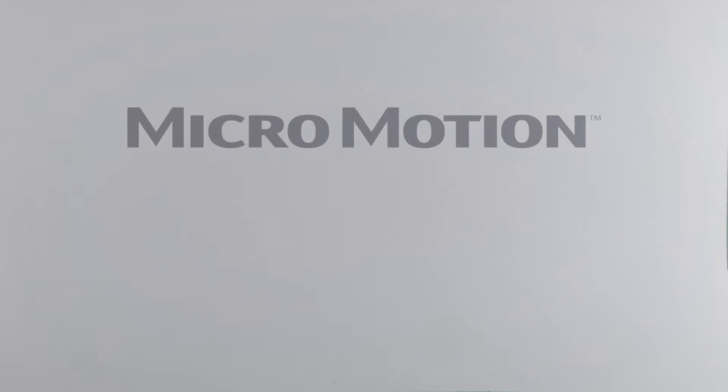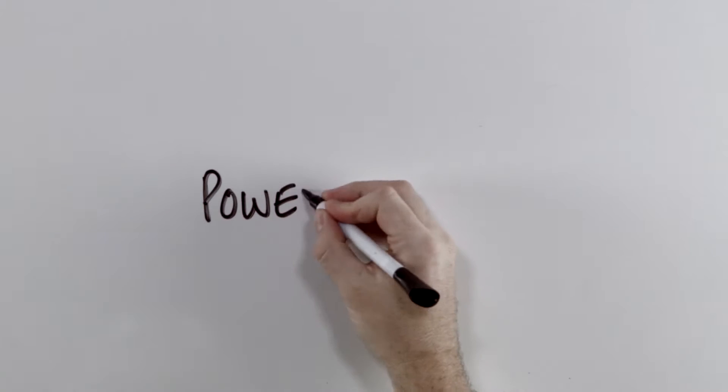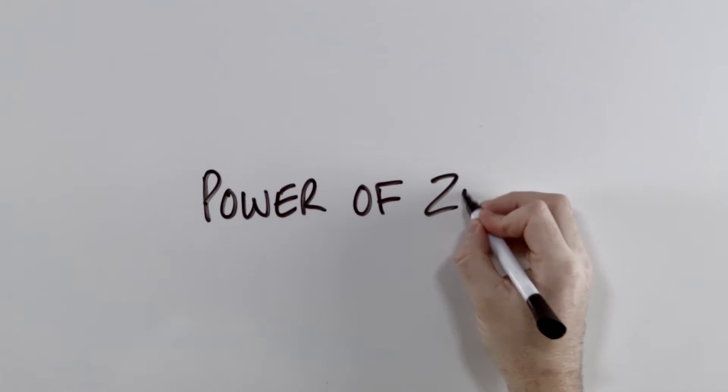Hi, today we're going to talk about Emerson's micromotion and zero verification. Let's start by solving one of the last remaining Coriolis mysteries. We'll call it the power of zero.